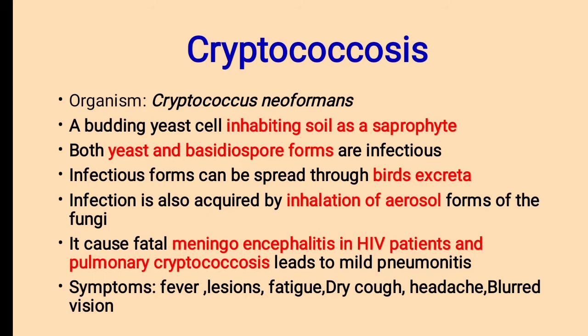It causes fatal meningoencephalitis in HIV patients, and pulmonary Cryptococcus leads to mild Pneumonitis. Meningoencephalitis means an infection in the meningeal membrane. Pneumonitis is a condition in which infection occurs in air sacs in the lungs, which may be filled with fluid. Symptoms of Cryptococcus include fever, lesions, fatigue, dry cough, headache, and blurred vision.